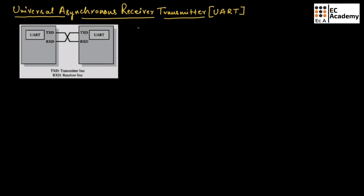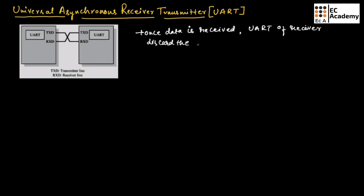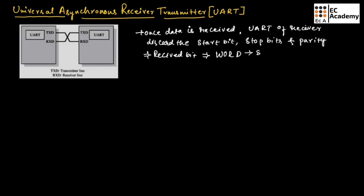Once the data is received, the UART of the receiver will discard the start bit, stop bit, and parity bit from the received bit stream, and will convert the serial data into a word if it has received 8 bits.